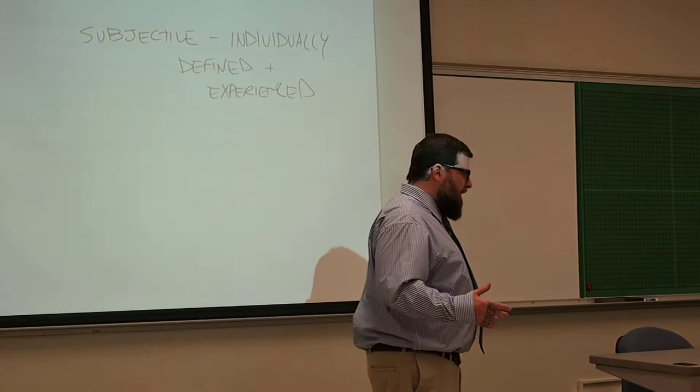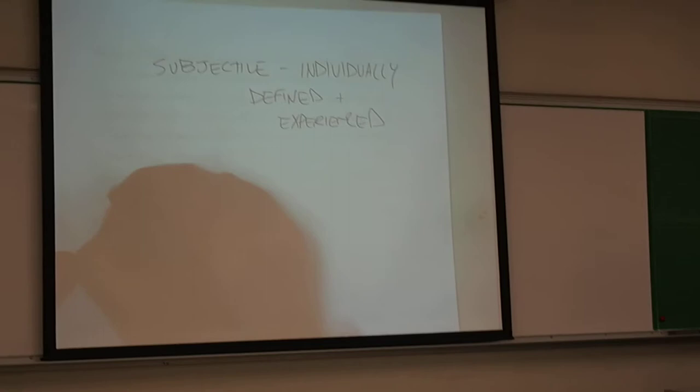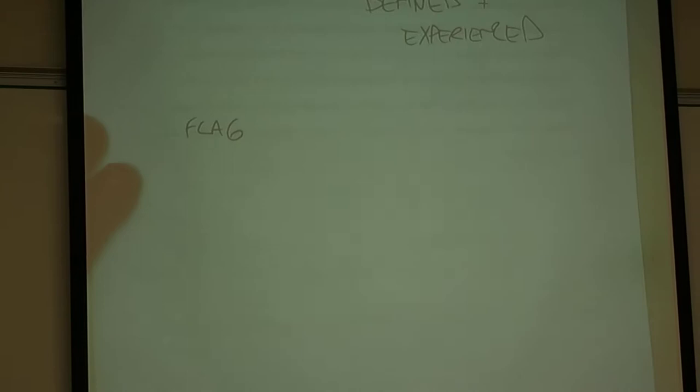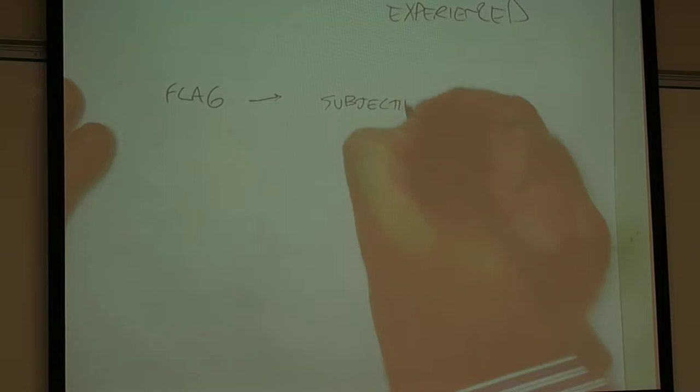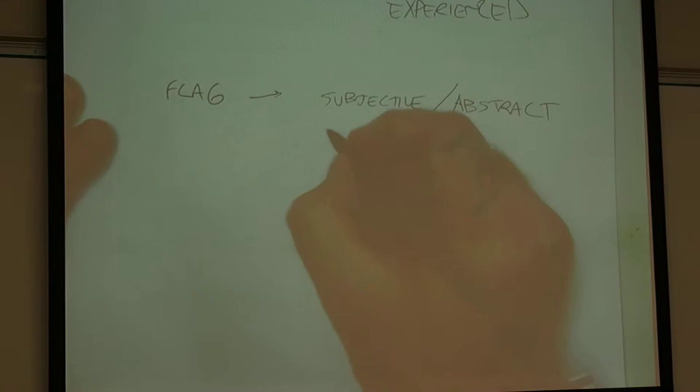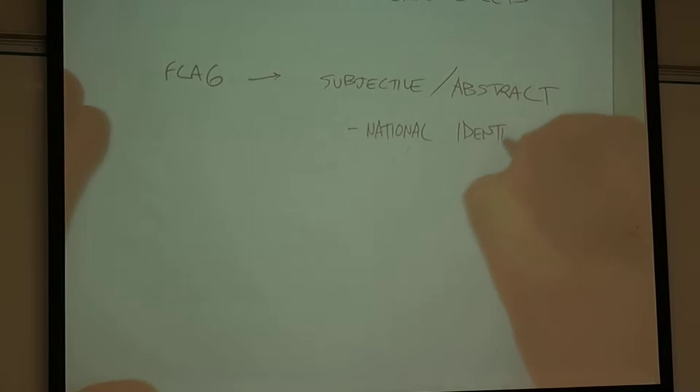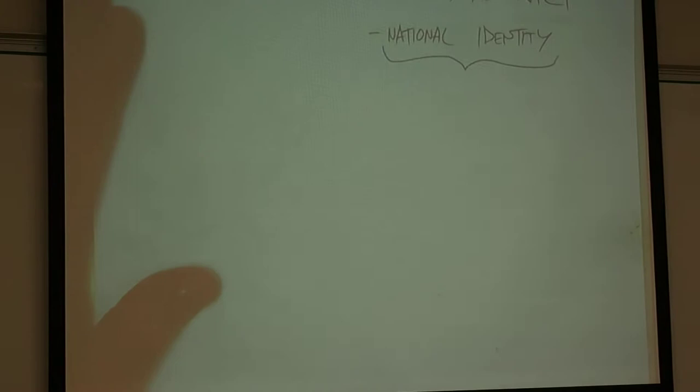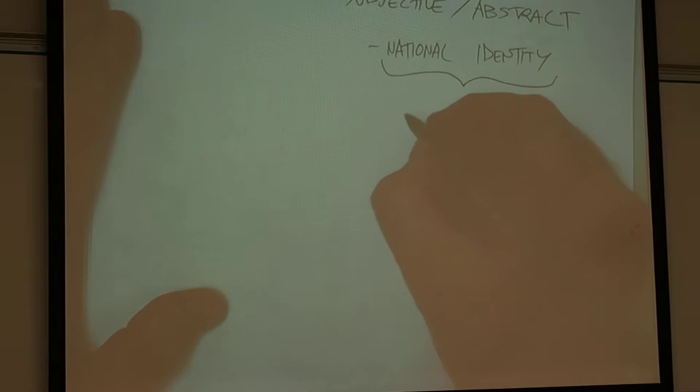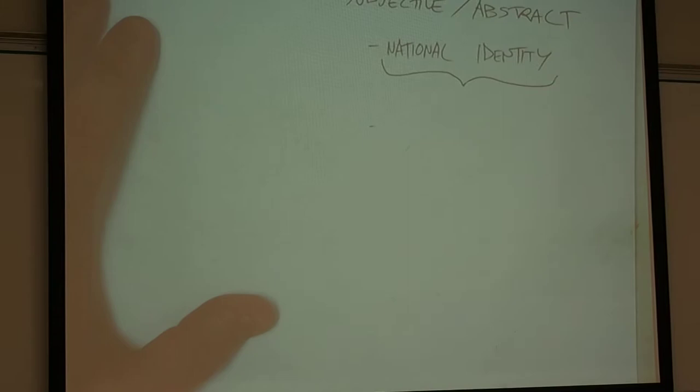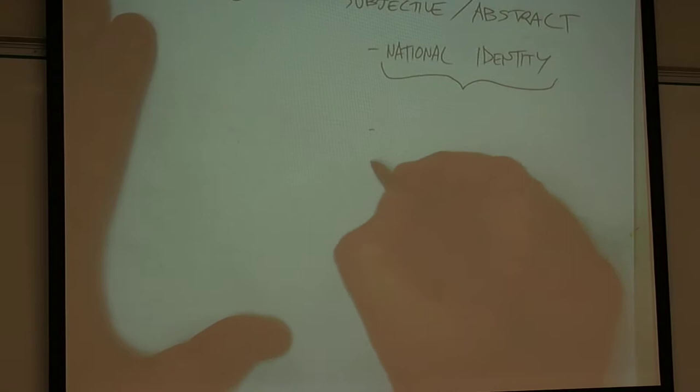At this point, I go back to the flag on the notes. We understand its objective and concrete nature, but now we start to talk about what are these subjective ideas associated with it. We might look at something like some sense of national identity, and we might discuss how national identity can differ from group to group and individual to individual. I would ask students at this point, what different ideas are they familiar with of national identity here in the United States, as represented by our flag.